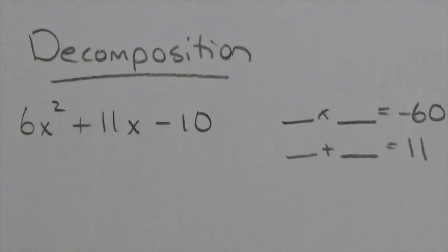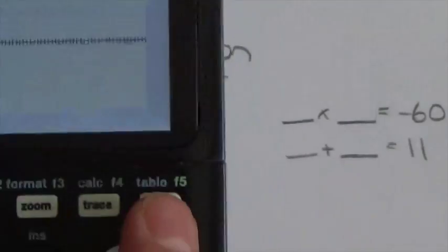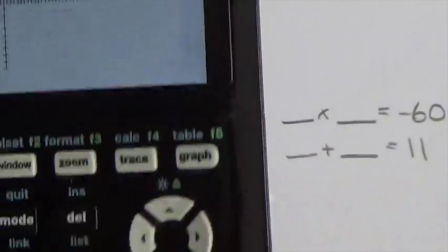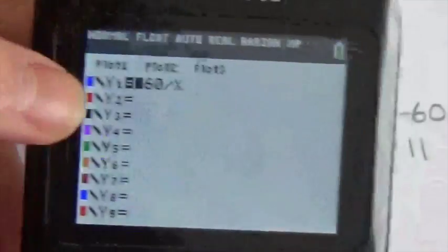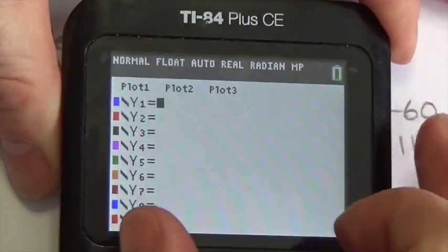Now, if you have a hard time guessing those numbers here, there is something that you can do. You can pull out your calculator, and I'll show you really quickly how you can let your calculator help you out with this. If you go to Y, whoops, sorry. If you press Y equals, sorry, my calculator's in the middle of something.